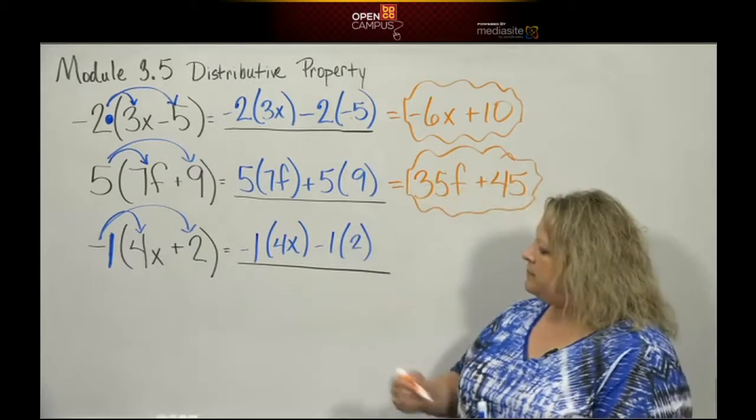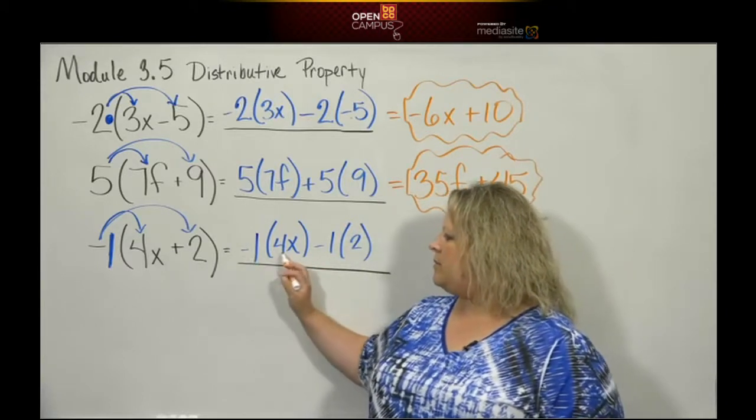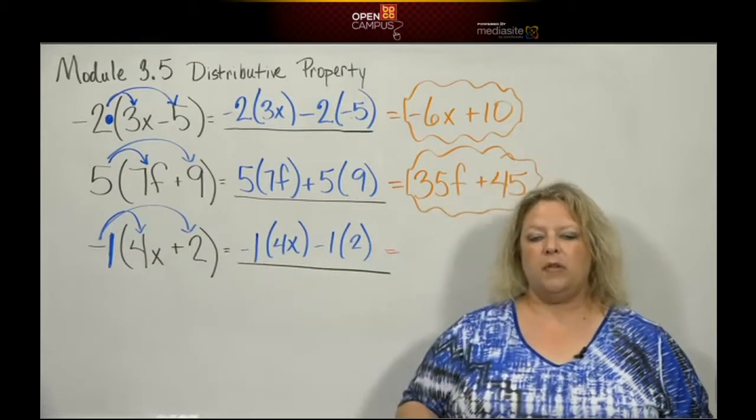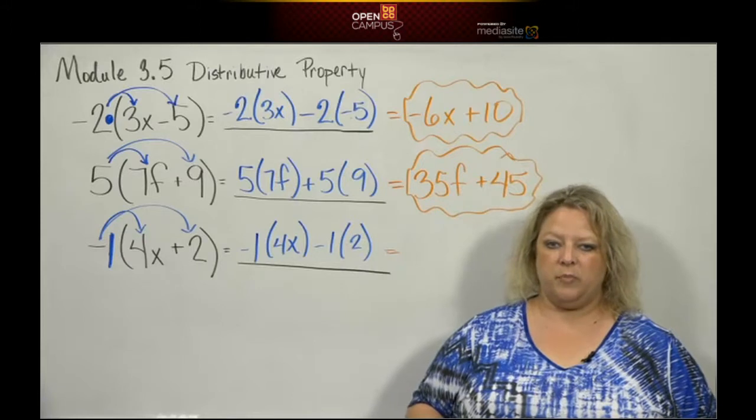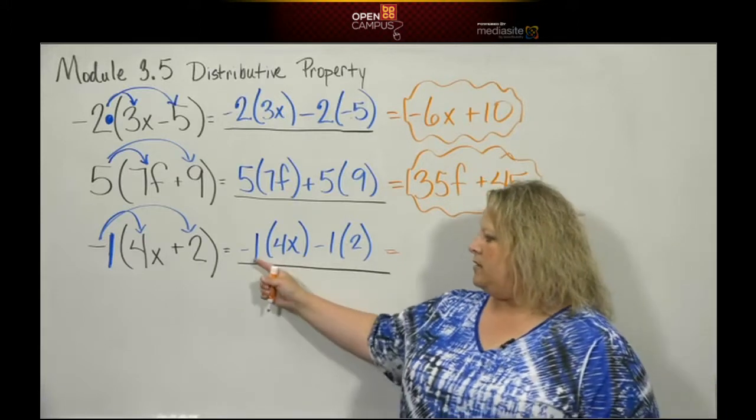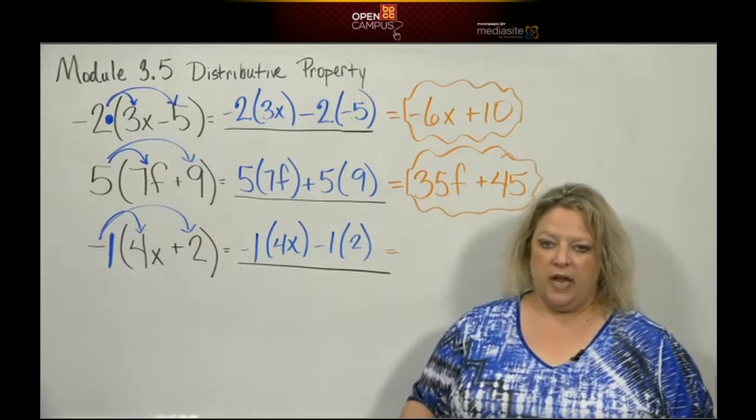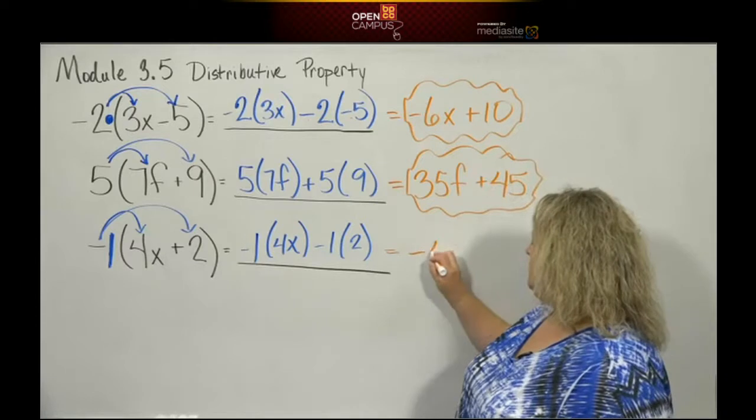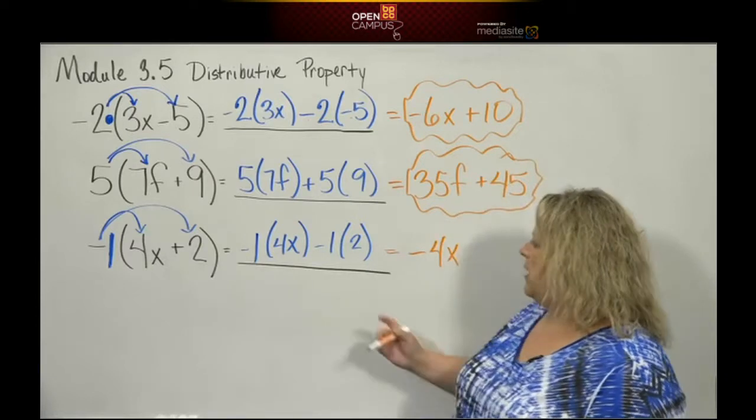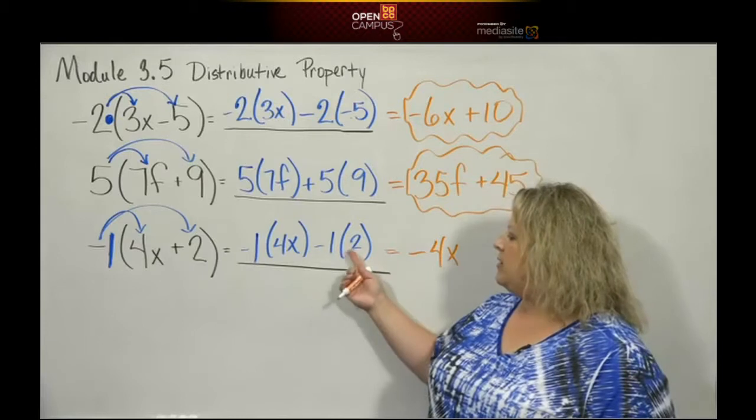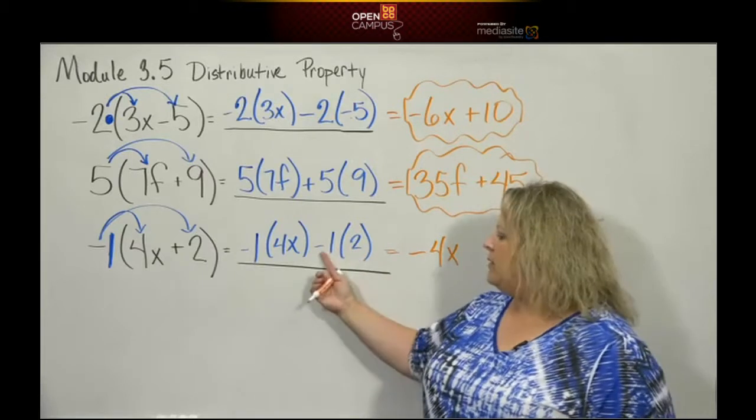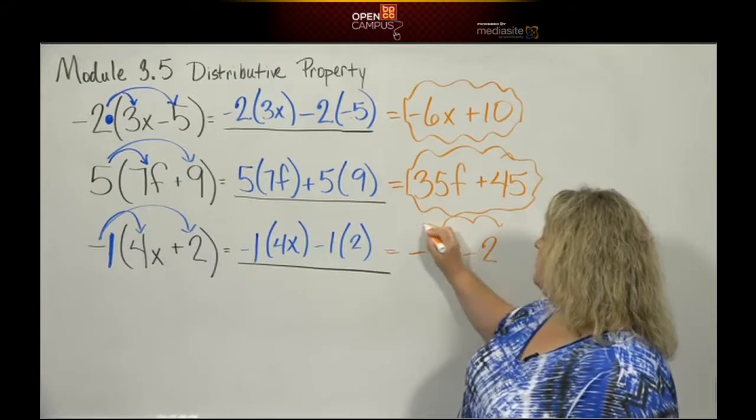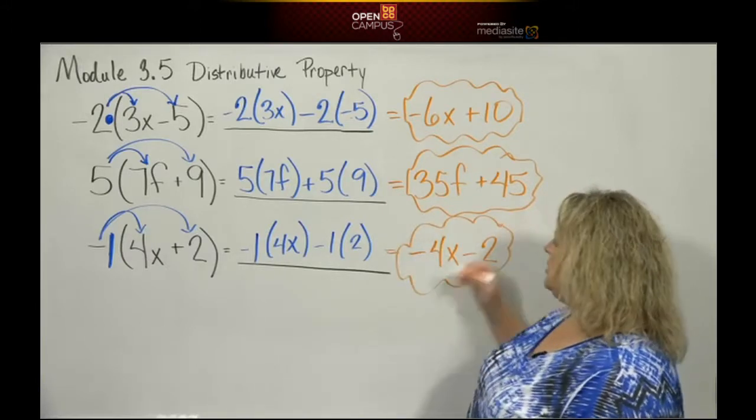So last but not least, we have a negative times a positive makes a negative. And when you multiply 1 to anything, remember, a couple of modules back, we talked about the multiplicative identity is 1. So when you multiply 1 times anything, it doesn't change the 4x except for the sign. So that's going to be negative 4x. And this is multiplicative identity. 2 times 1 is 2. The only thing that changed is the sign. It becomes a negative 2. And those are not like terms, so we just leave them alone.